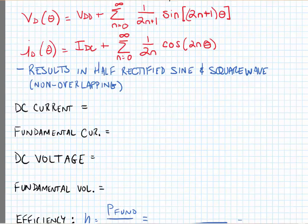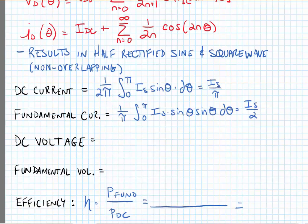We can continue with the analysis to find the DC current, the fundamental current, the DC voltage, and the fundamental voltage, which will help us find the efficiency of the amplifier. Solving the integrals for the DC current and fundamental current across one period yields a DC current of IS/π and a fundamental current of IS/2.